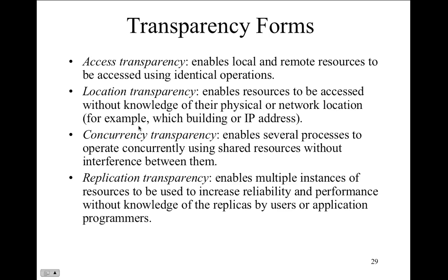Location transparency enables resources to be accessed without knowledge of their physical or network location. For example, when you access Google, you have no idea which server in which state you connected to or which IP address. Concurrency transparency means not knowing that everybody is connecting to the same server simultaneously — it enables several processes to operate concurrently among shared resources without interference. You know that applications are running concurrently and users are connecting concurrently, but you don't notice it.